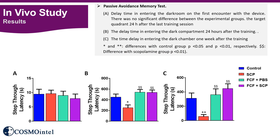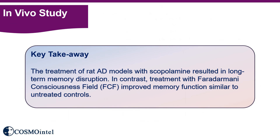Regarding inhibitory avoidance, as shown in figure A, no significant difference was observed in the initial step-through latency before any medication was administered. In figure B, animals treated with scopolamine developed impaired avoidance memory 24 hours after training, while there was no significant difference between the FCF treatment group and the control group. However, the FCF-plus-scopolamine group prevented memory impairment and restored the ability to recall. Figure C shows the one-week recall result: the scopolamine-treated group recalled the shock memory similarly to the control group due to faradharmonic consciousness field treatment. Therefore, treatment with faradharmonic consciousness field improved memory function similarly to the untreated control.